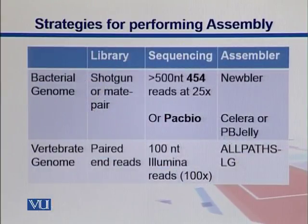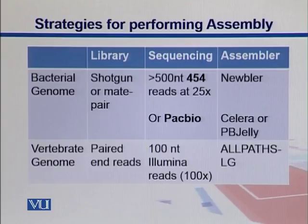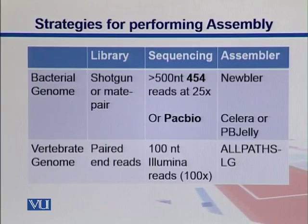Here we can see a comparison for bacterial versus vertebrate, or prokaryote versus eukaryote genome assembly. For prokaryote or bacteria, you can use shotgun or mate-paired sequencing with 454 reads over 500 nucleotides at 25x coverage — in this case you might want to use the assembler called Newbler. Similarly, with PacBio reads you can use Celera or PBGLA.